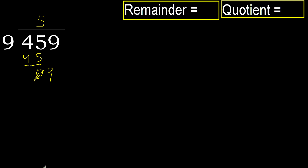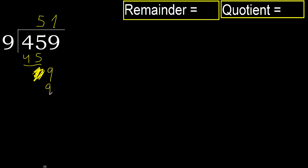Eliminate 0 here. Ok, 9. 9 multiplied by 1 is 9, is not greater. Ok, subtract 9 minus 9 equals 0, next.